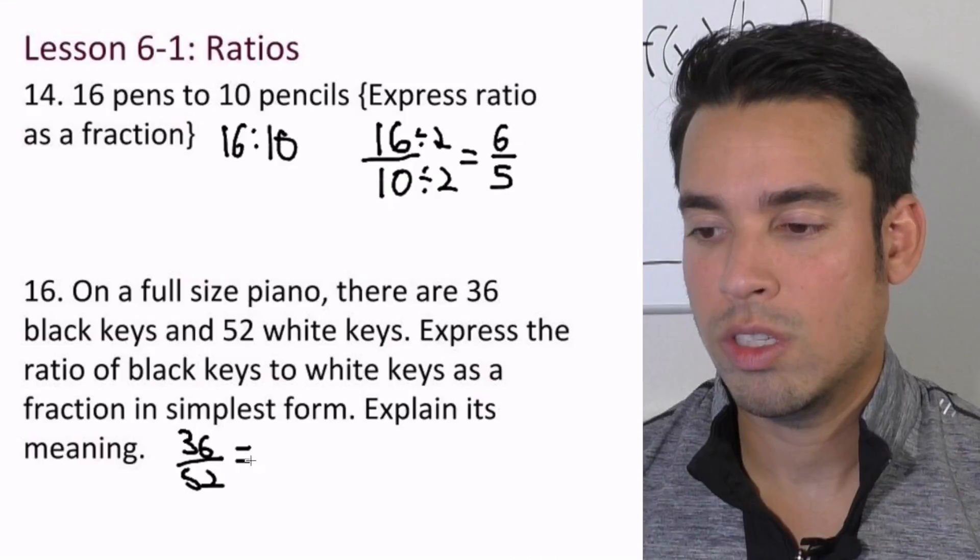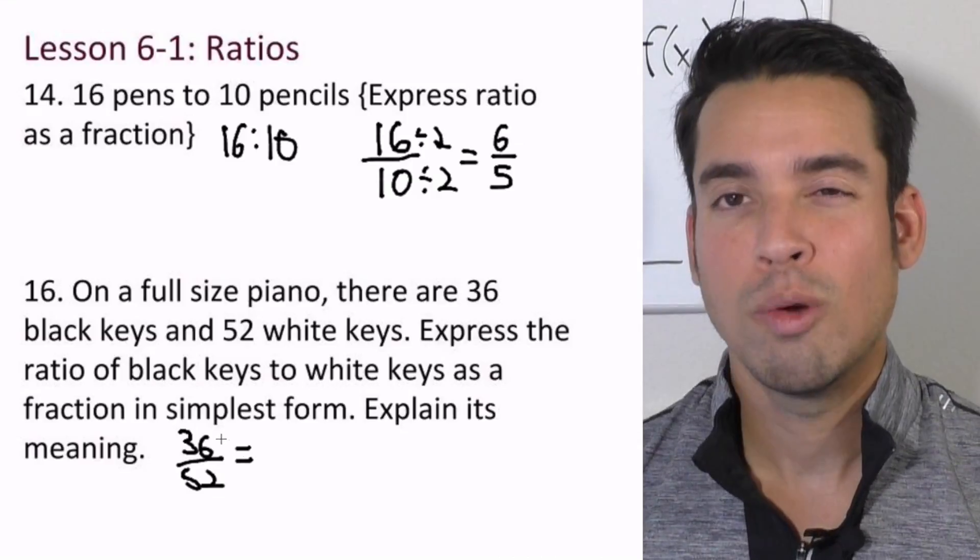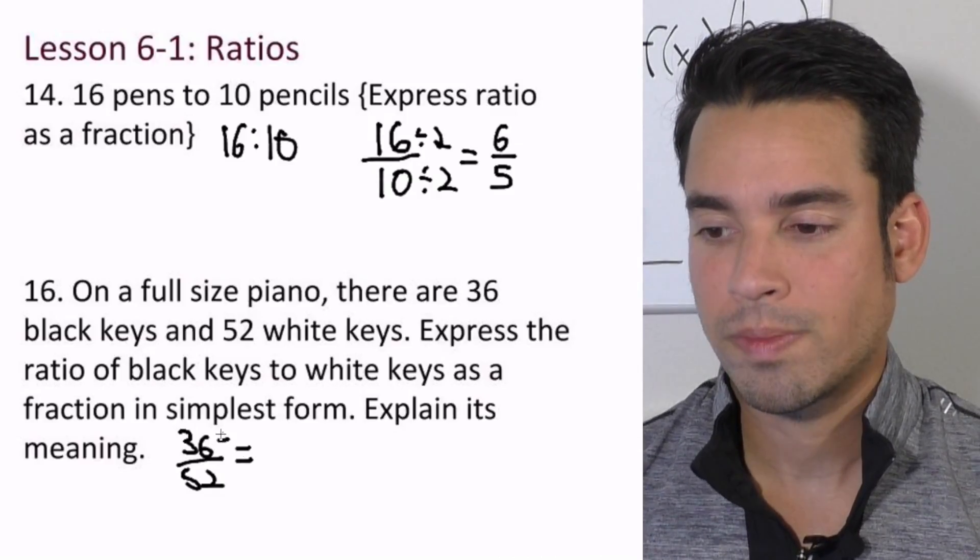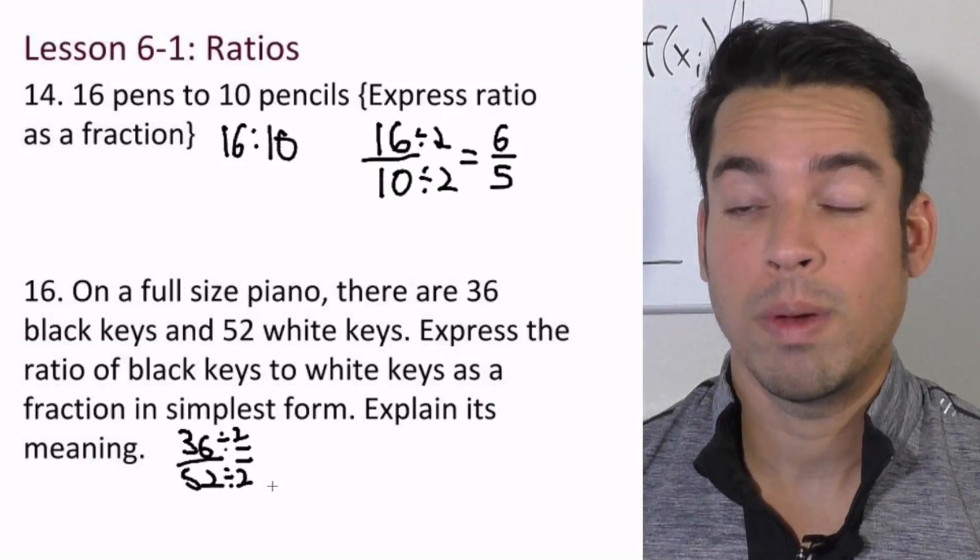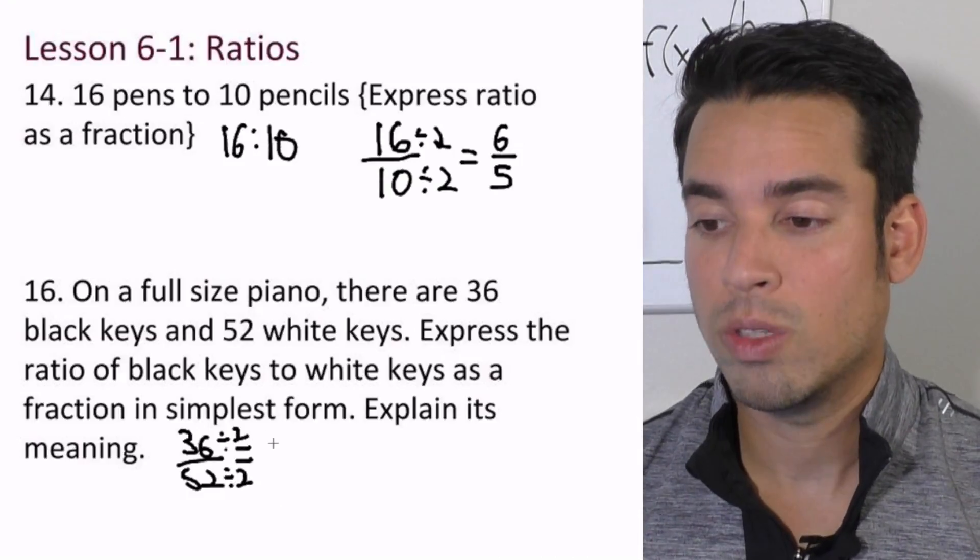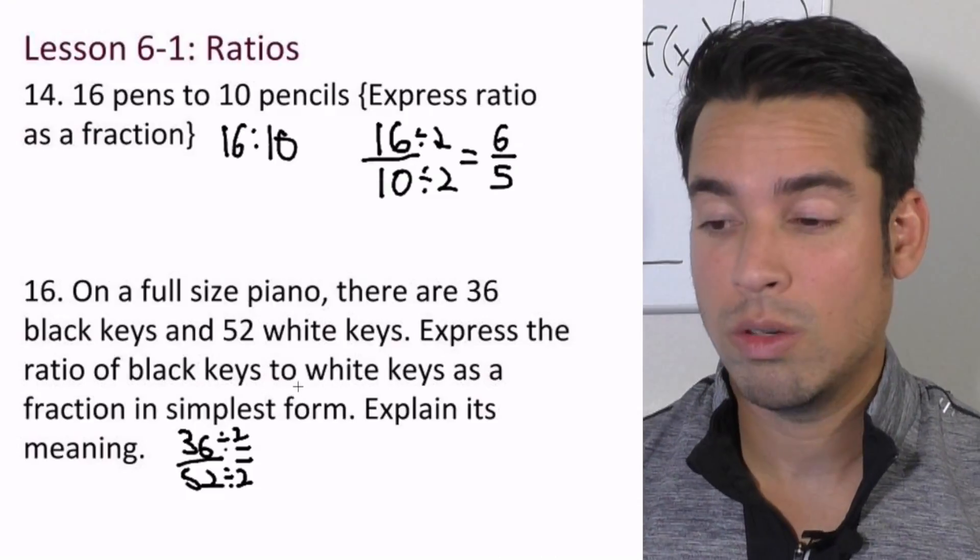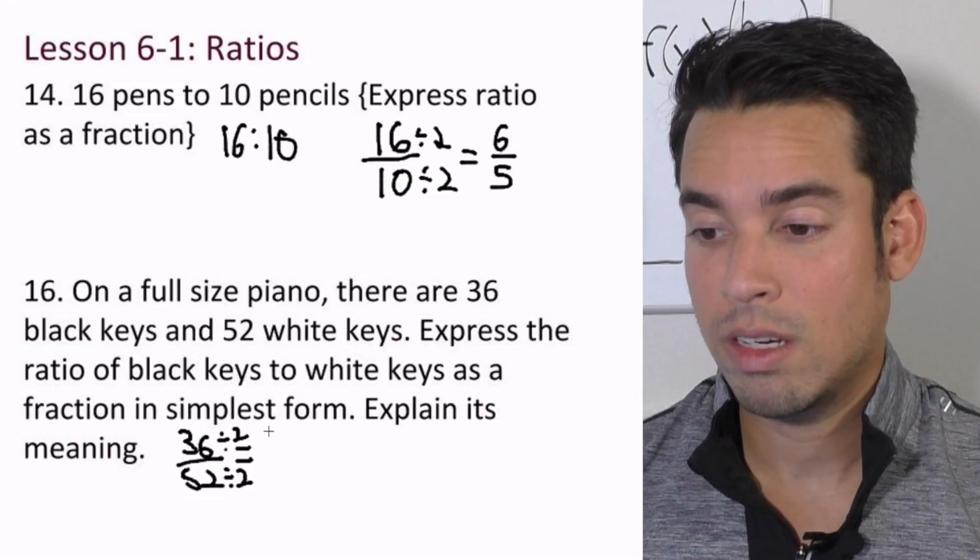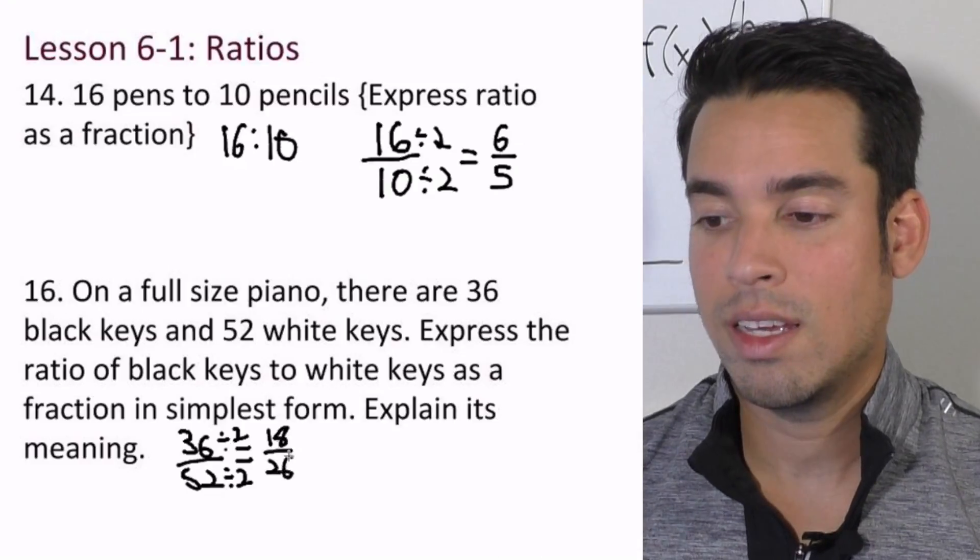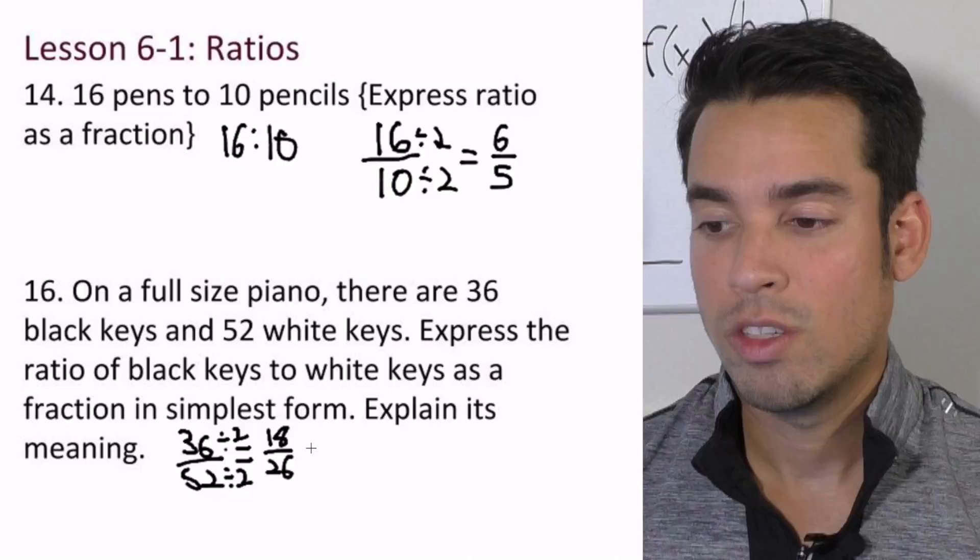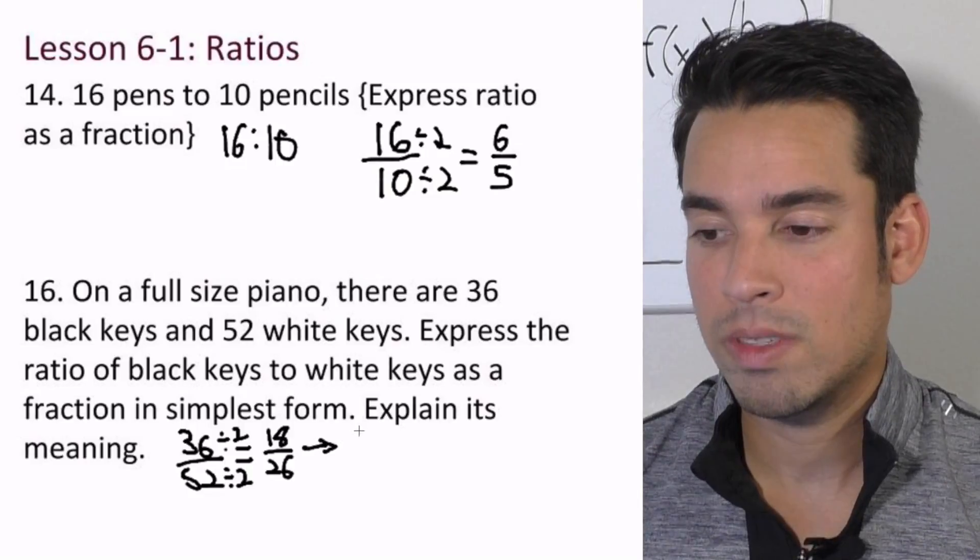to 52. And how do we reduce this? We're going to divide both of these by two. Actually we can divide both by four, but we'll start with two—it doesn't matter, you can go in any order you want, you'll still get to the same place. So that becomes 18 over 26. And we can see again these are both divisible by two, so we do that again and it becomes 9 over 13.